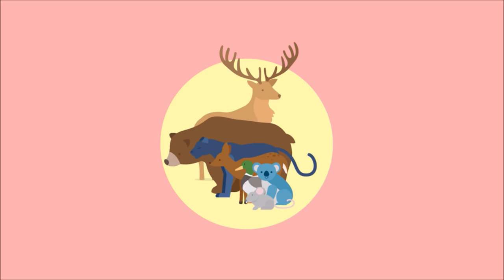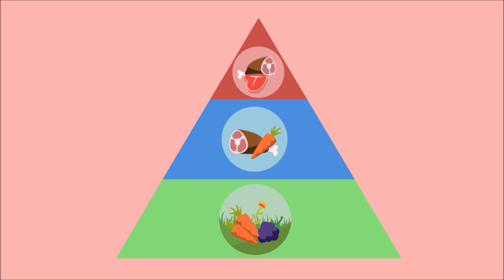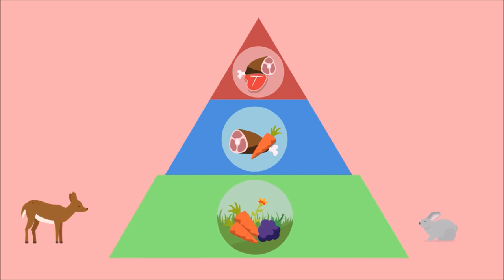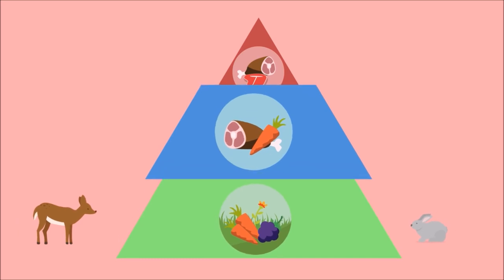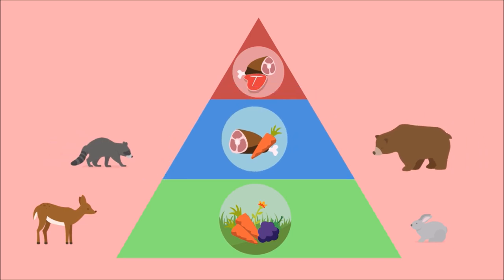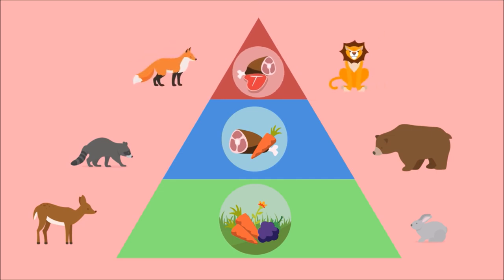The biotic components of an ecosystem also interact with one another, much like the abiotic components. One of the best examples of this is how the various trophic levels interact with each other. A trophic level is how scientists classify animals based on their food preferences. At the lowest trophic level are the herbivores, those animals that primarily eat plants. In the next highest trophic level are the animals that eat herbivores as well as some plants, known as omnivores. The highest trophic level is the carnivore, represented by animals such as wolves, lions, and eagles.